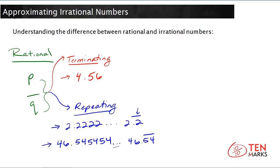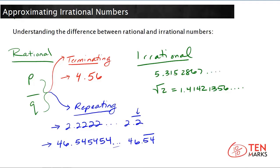Now, there are some numbers that are non-terminating and have no repeating pattern, and these are irrational numbers. Let me show you some examples. Irrational numbers cannot be written as a fraction of p over q. Here is one example: 5.3152867..., which continues on forever. As you can see, there is no repeating pattern and the decimals do not end, so this is an irrational number.